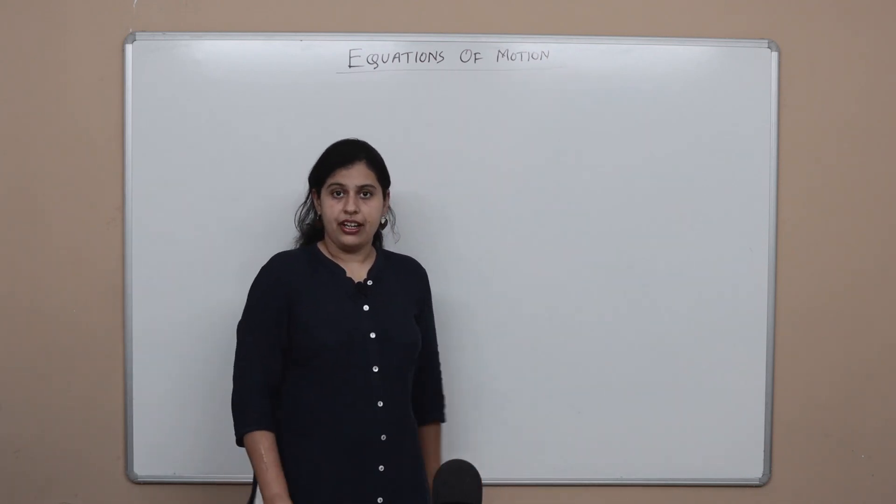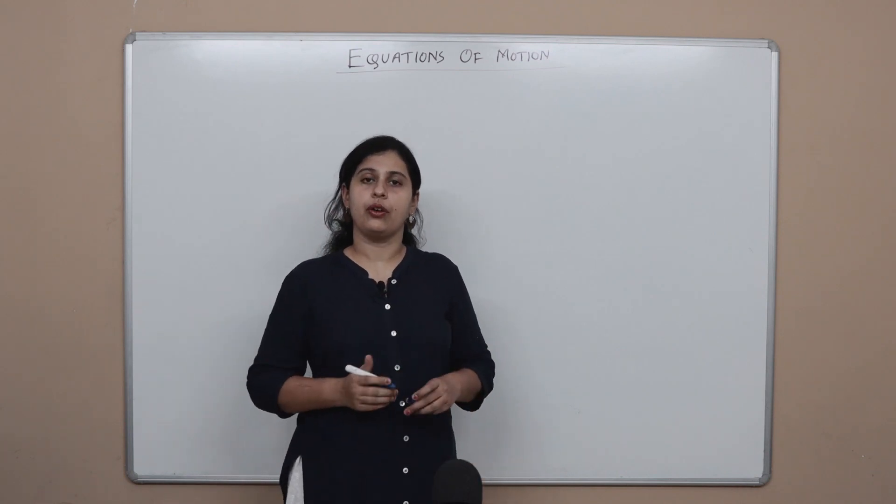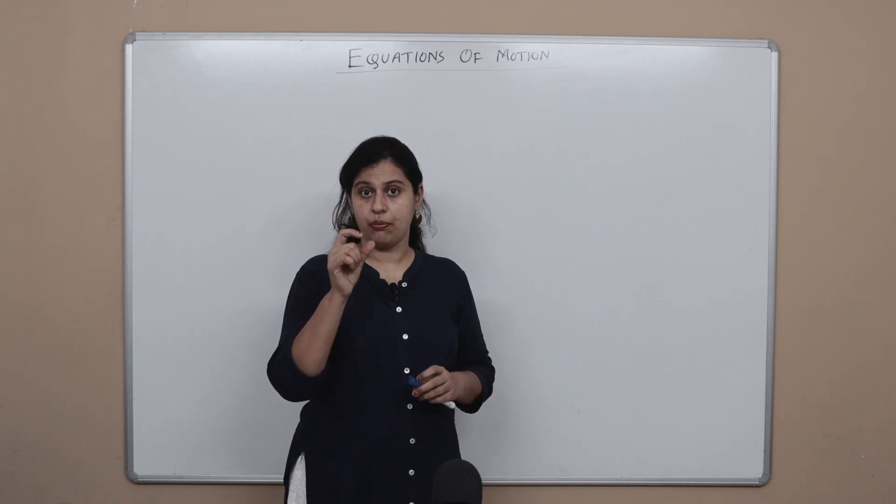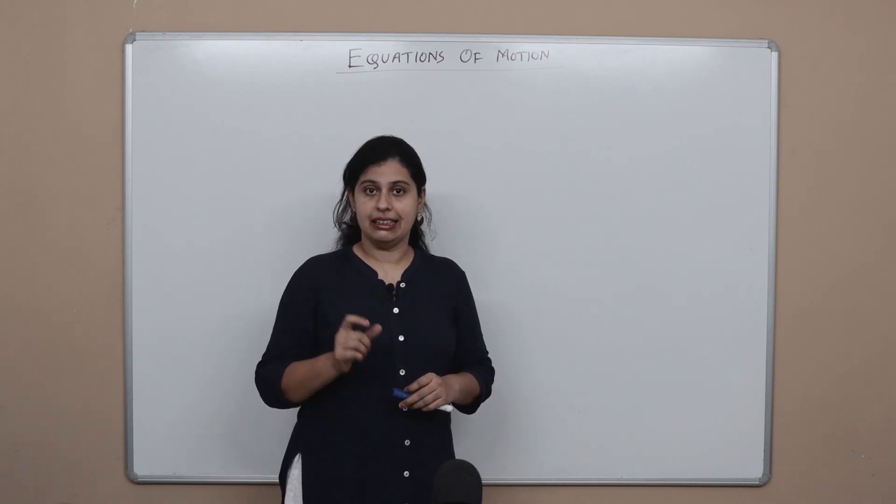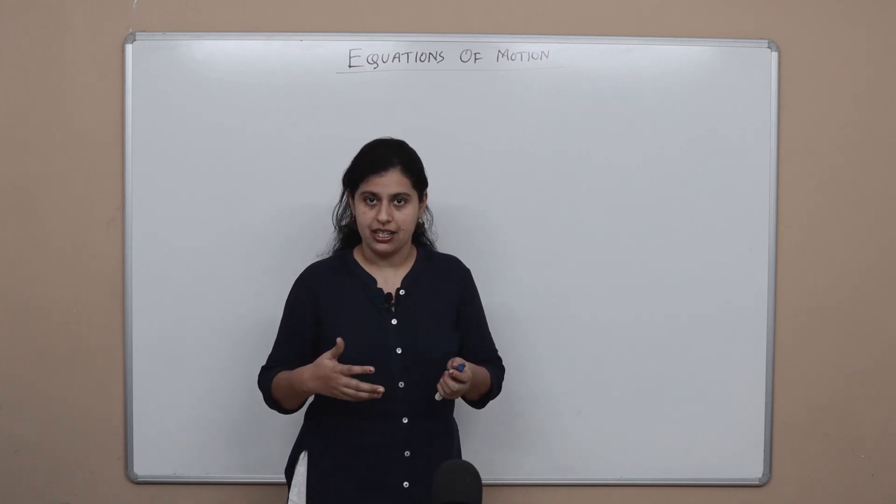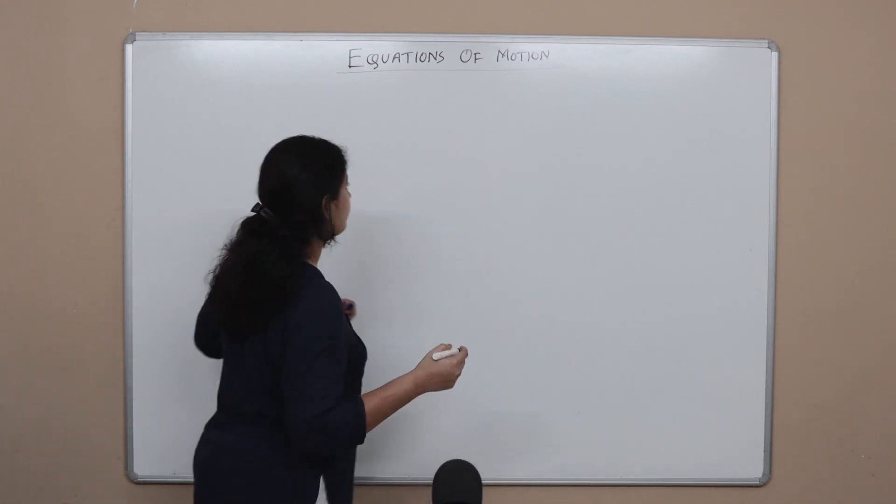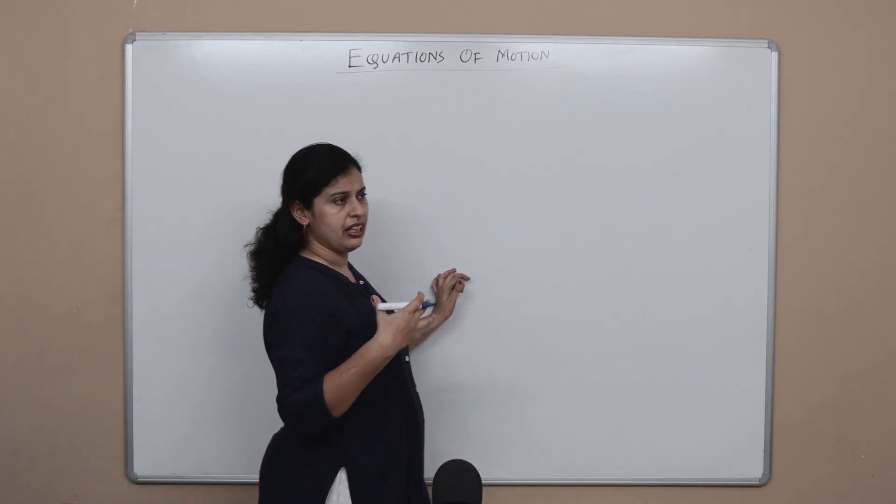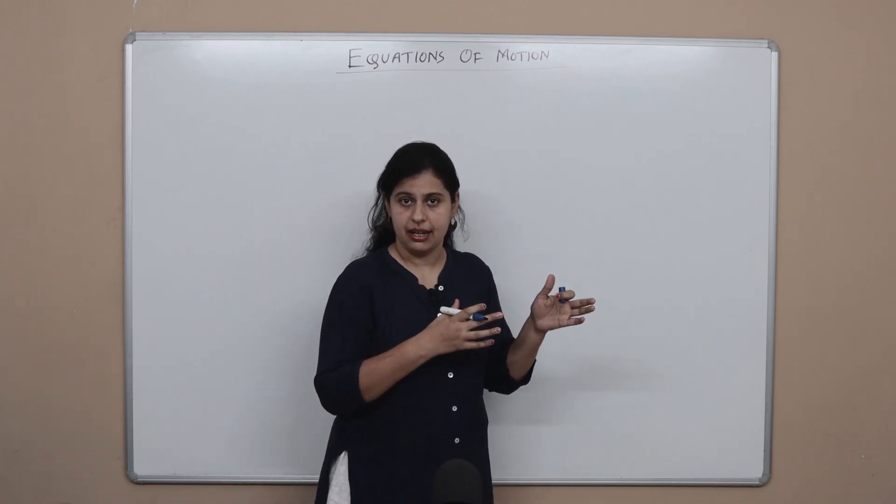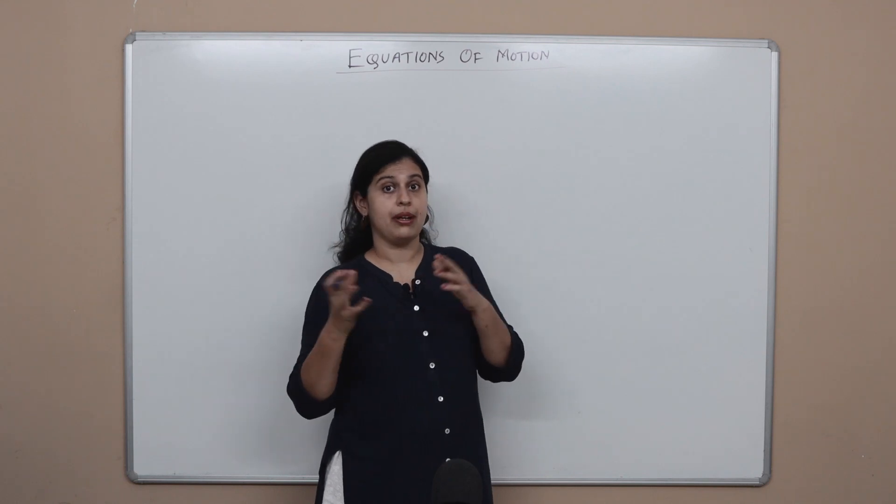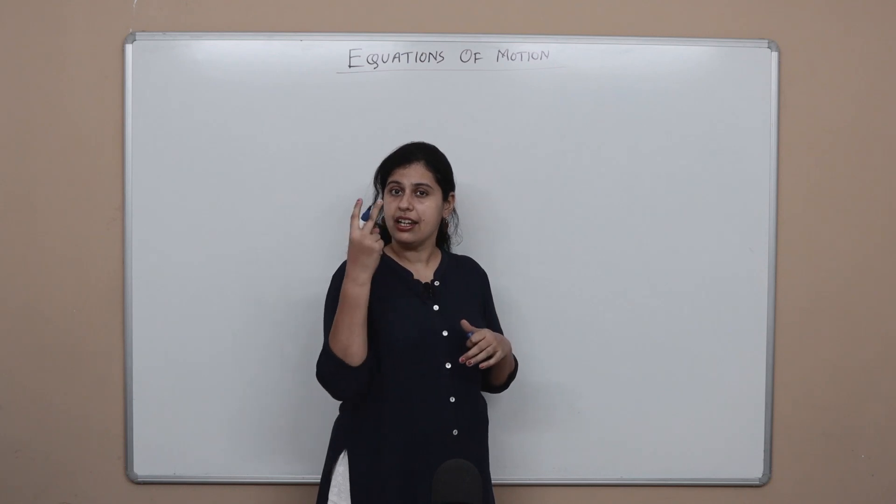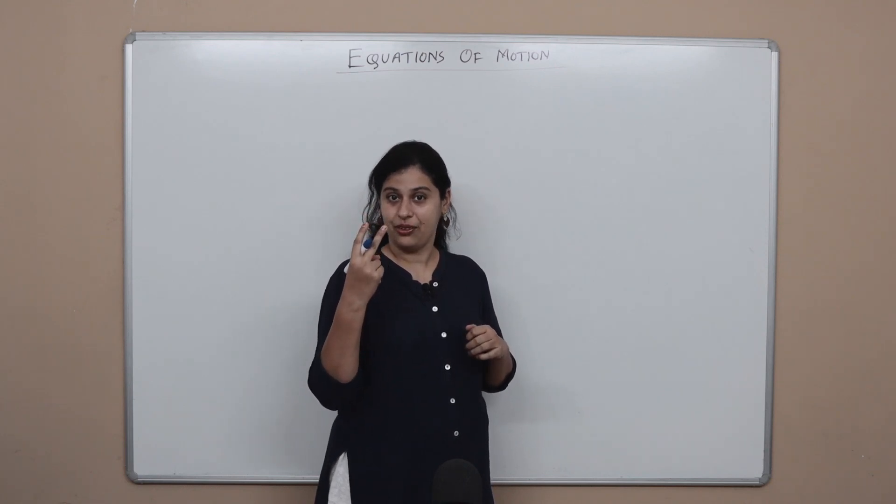Now before we begin with the actual derivation, first what we are going to do is a quick recap of the most important terms, the most important variables that we are going to use in these equations or in anything that involves moving objects. Let's start. Now whenever an object is moving, rarely do we come across a scenario where the velocity remains the same, so it's safe enough to say that there will be a change in velocity. If there is a change in velocity, there are going to be at least two types of velocities, right?